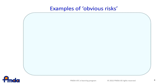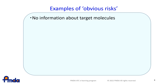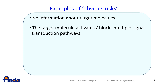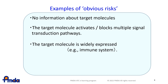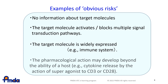Obvious risks refer to drugs with any of these properties: no information about the target molecules; the target molecule activates or blocks multiple signal transduction pathways; the target molecule is widely expressed; or the pharmacological action may develop beyond the ability of a host.